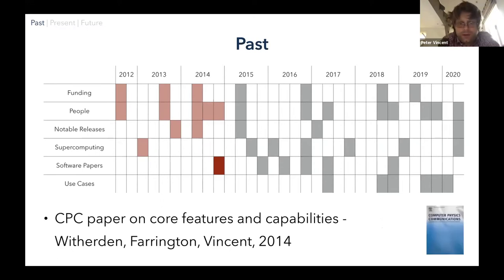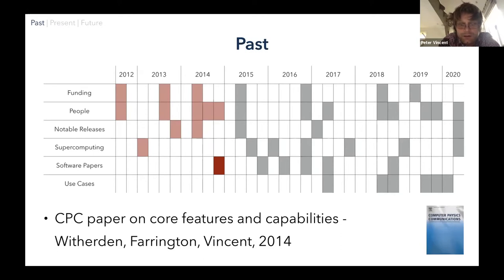By the end of 2014, we had our first paper out in the journal Computer Physics Communications — a very nice journal for disseminating software developments as well as numerical and physics analysis. The capabilities described in that paper were from our version 0.1 release that came out about a year earlier; the peer review process can take a while.